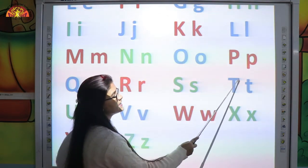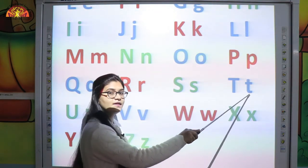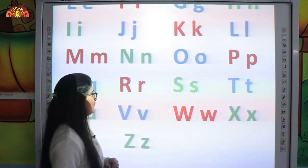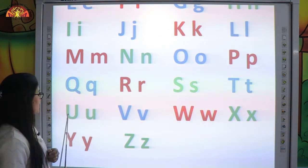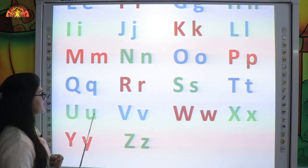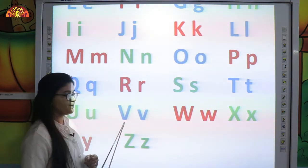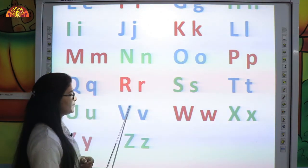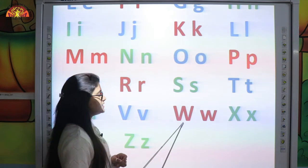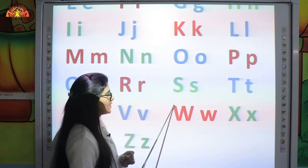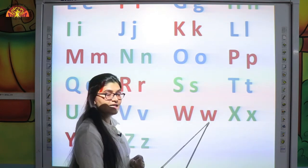This is uppercase letter T. And this is lowercase letter T. Now tell me which letter is this? This is uppercase letter U. This is lowercase letter U. This is uppercase letter V. This is lowercase letter V. This is uppercase letter W. And this is lowercase letter W.